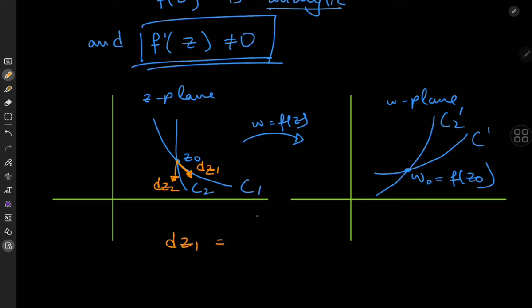Now let me write them using the polar form. So dz1 equals absolute value dz1 times e to the i phi1 and dz2 equals the absolute value of dz2 times e to the phi2 where phi1 and phi2 are the arguments of dz1 and dz2 respectively.